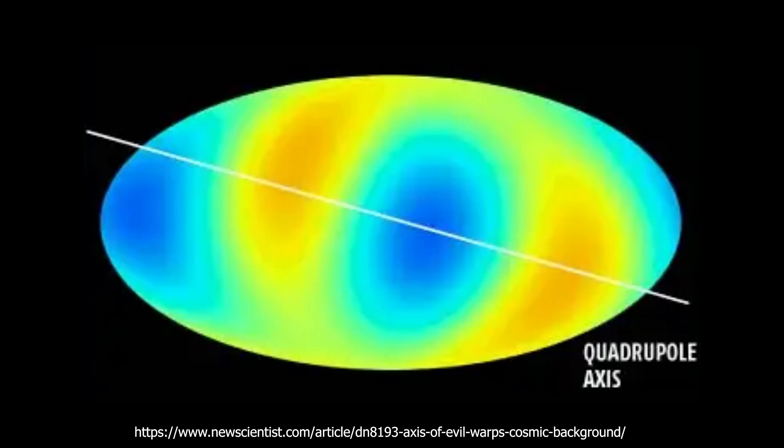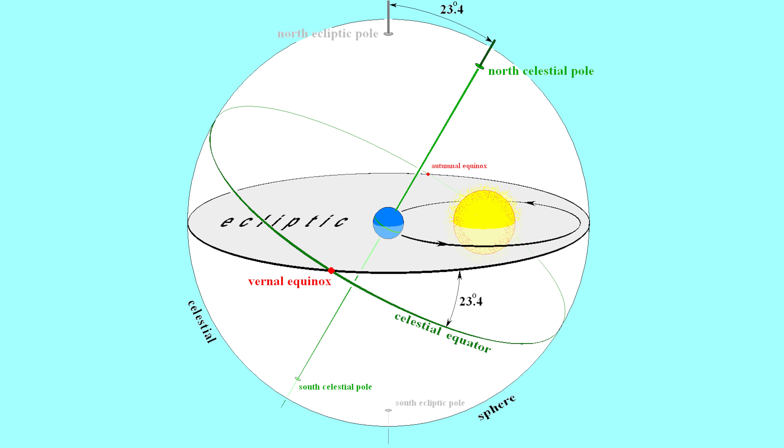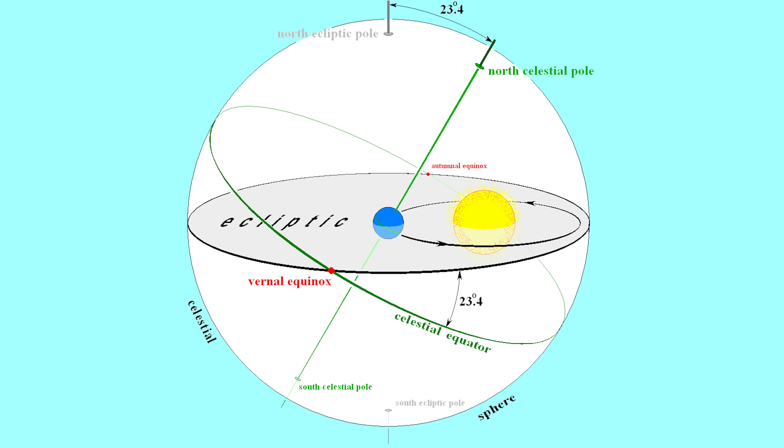But here's where it gets interesting. If you increase the contrast even further and you subtract out the dipole then you see another pattern called the quadrupole that looks like this. And then if you increase contrast even further you find another pattern called the octopole that looks like this. Both the quadrupole and the octopole modes have an unexplained alignment with each other and with the ecliptic plane and equinox. And this plane is called the axis of evil.